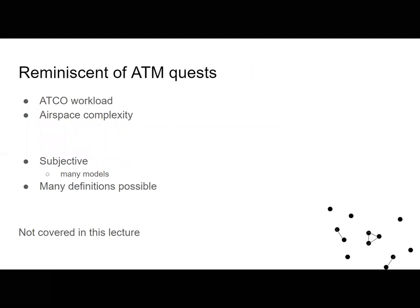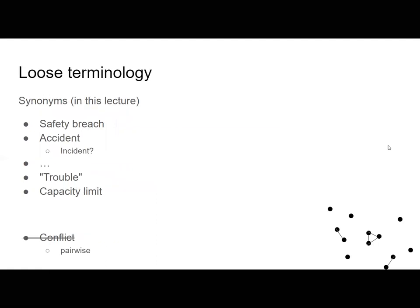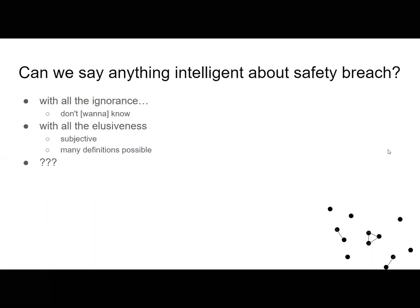The safety breach can be related to air traffic controller workload or the complexity of the space — it's also subjective. I just want to say that whenever I have a safety breach, an accident, or I've reached capacity limits with too many things in the sky, things are bad. With this loose definition — or actual absence of definition — can we even say anything at all about safety breach?